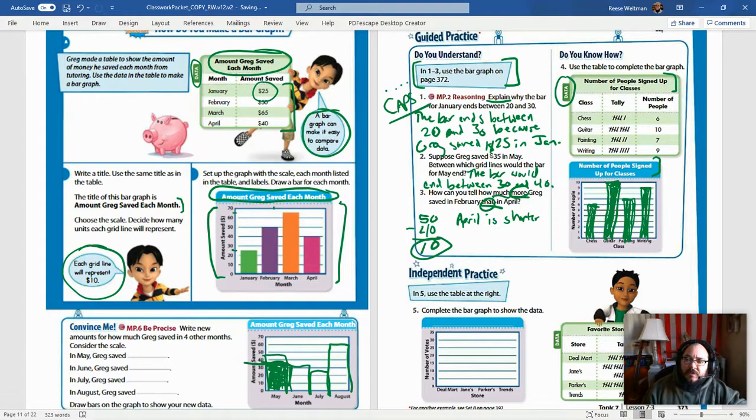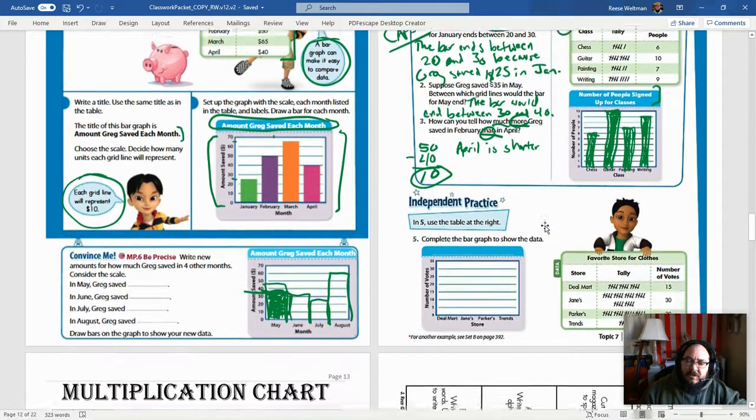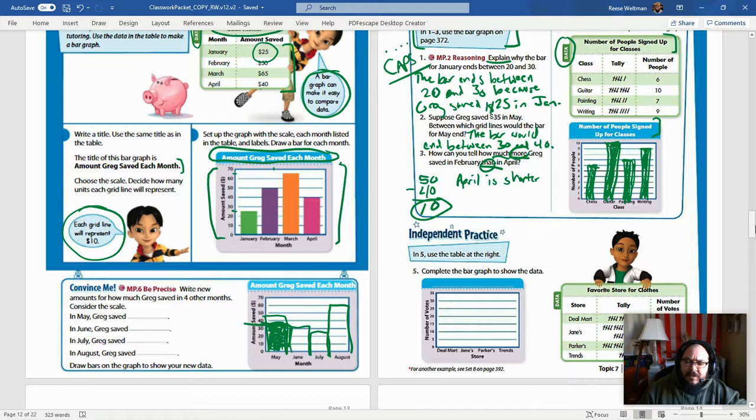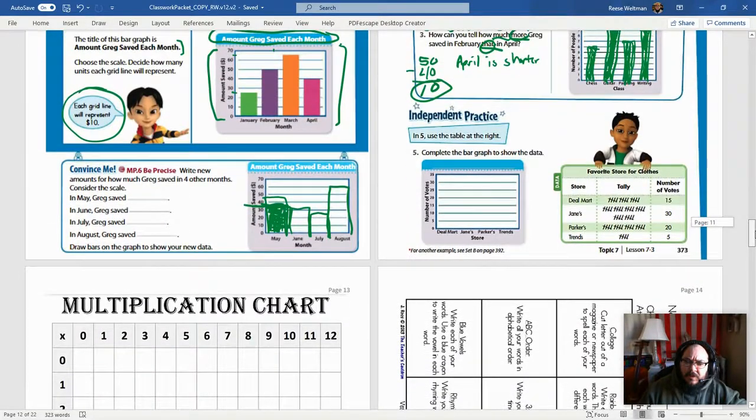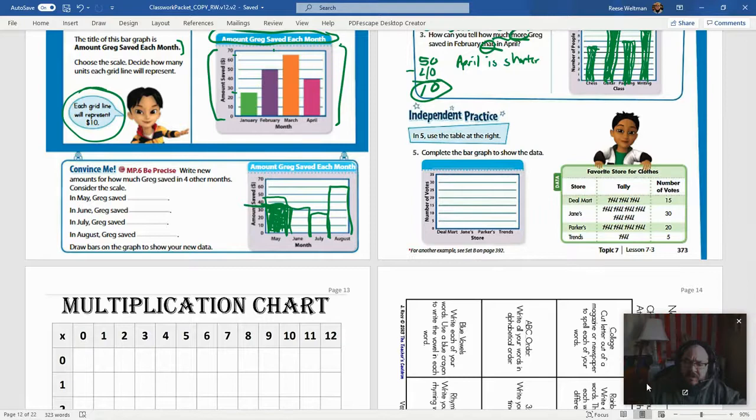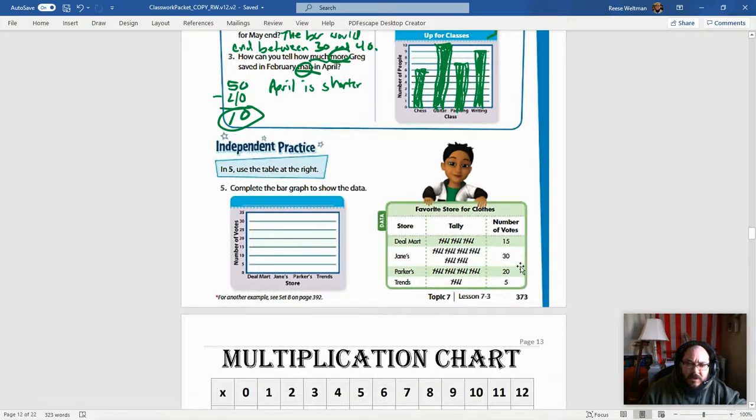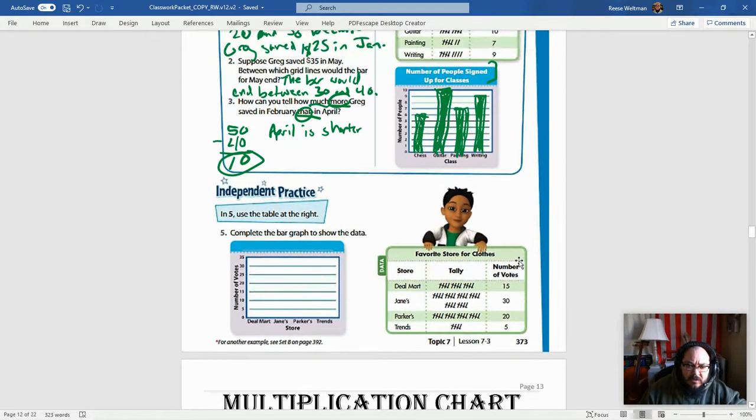Now, down here in the independent practice section, let's take a quick look at that. Go ahead and ignore the other work at the bottom here. Let's focus right over here on the independent practice section. And let's see if we can make it just a bit bigger so we can look at it a little closer. We're going to complete the bar to show the data.